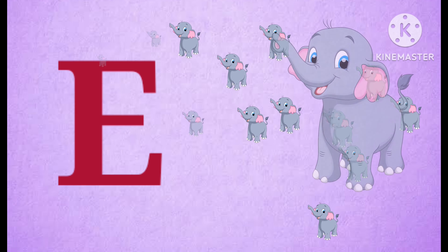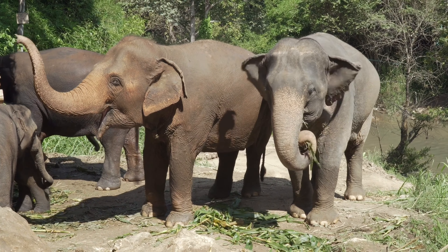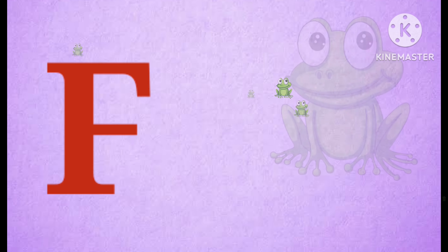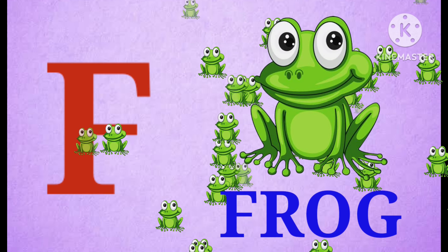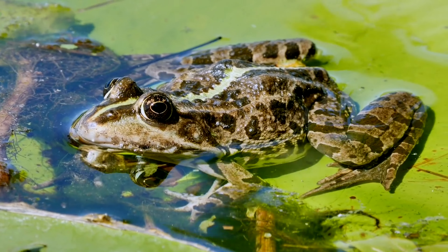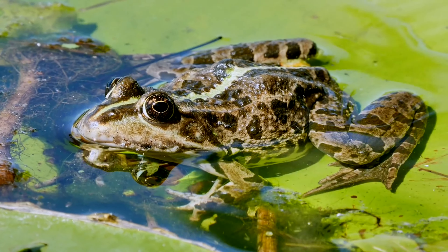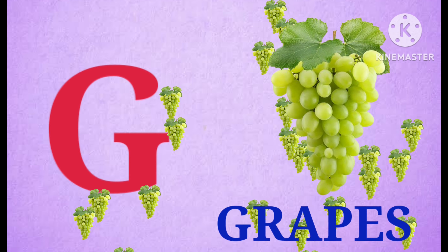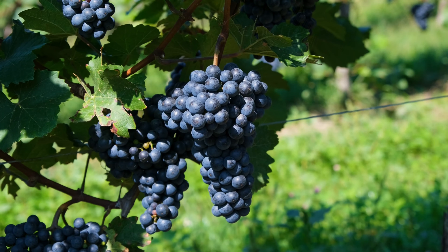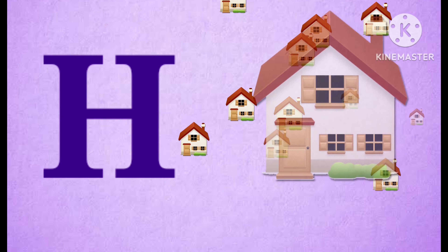E. E for Elephant. F. F for Frog. G. G for Grapes. H. H for House.